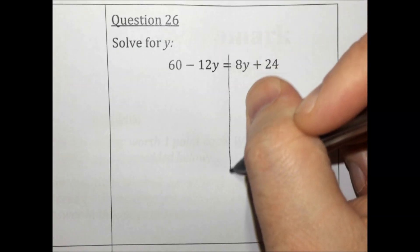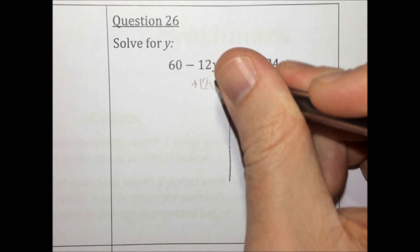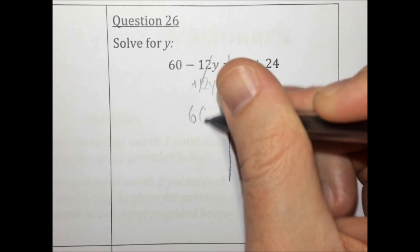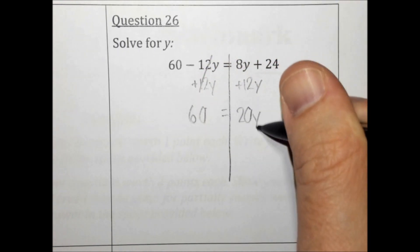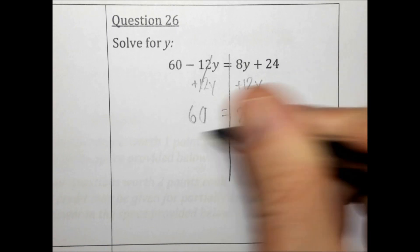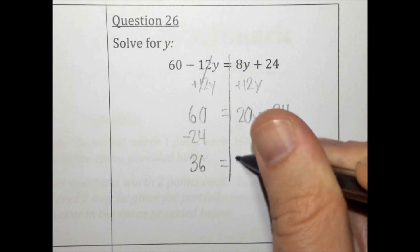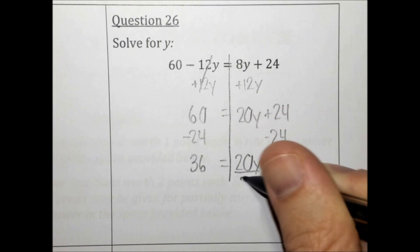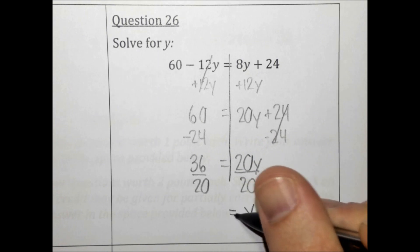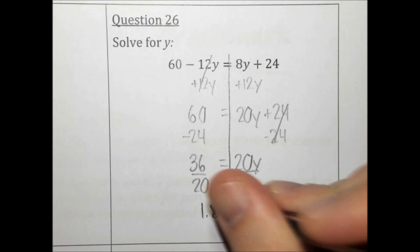Solve for y. Here we have the smaller variable — let's add it to both sides. We're going to get 60 equals 20y plus 24. Let's get everything away from the variable by doing minus 24, giving us 36 equals 20y. Divide everything on both sides by 20, and we get y equals 1.8.